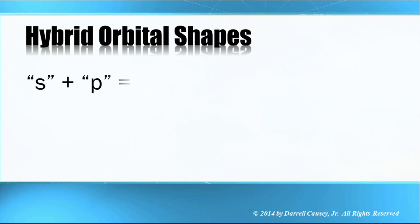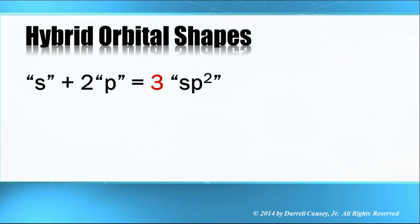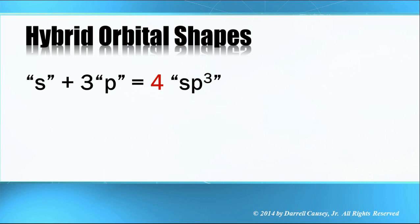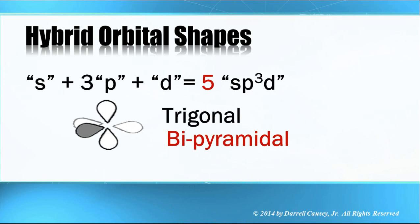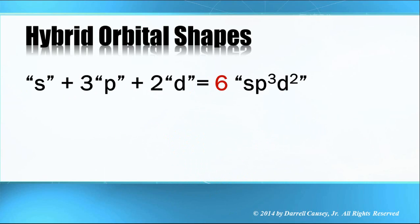Hybrid orbital shapes: if we have an s plus a p, we get two sp orbitals — that's linear. If we have an s and two p's, that gives us three sp² orbitals — that's trigonal planar. An s and three p's gives us four sp³ orbitals — that's tetrahedral. An s, three p's, and a d combine to give us five sp³d orbitals — that's trigonal bipyramidal. And an s plus three p's plus two d's gives us six sp³d² orbitals — that's octahedral.